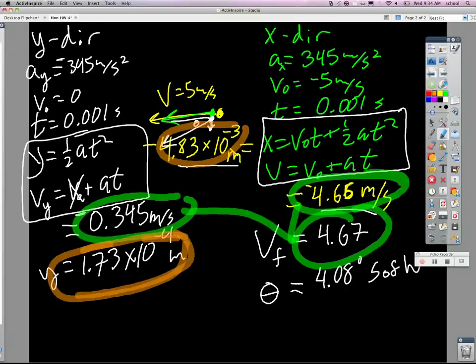I used inverse tangent, so equals of 0.345, actually negative 0.345 meters per second, over negative 4.66 meters per second. All right?